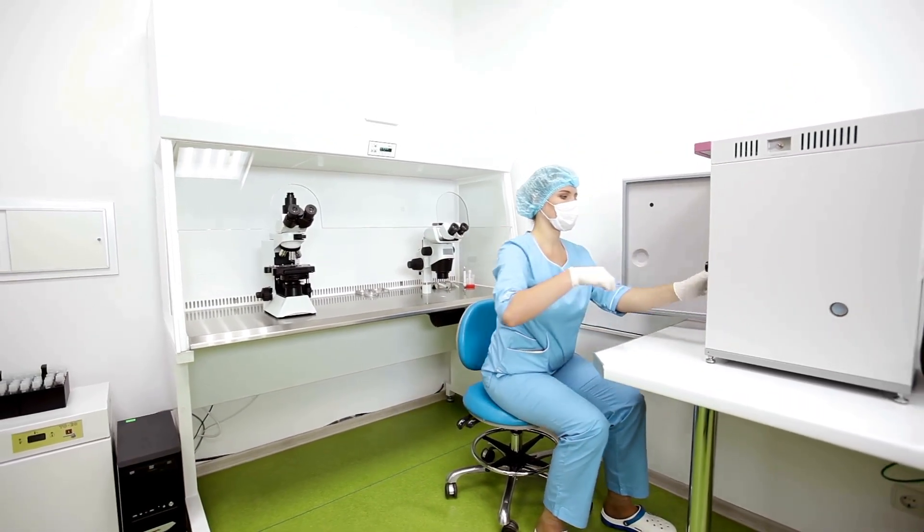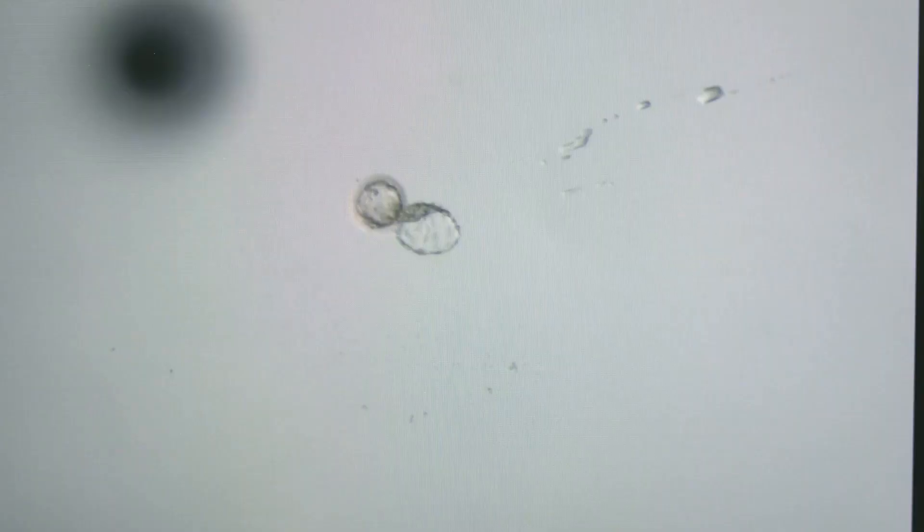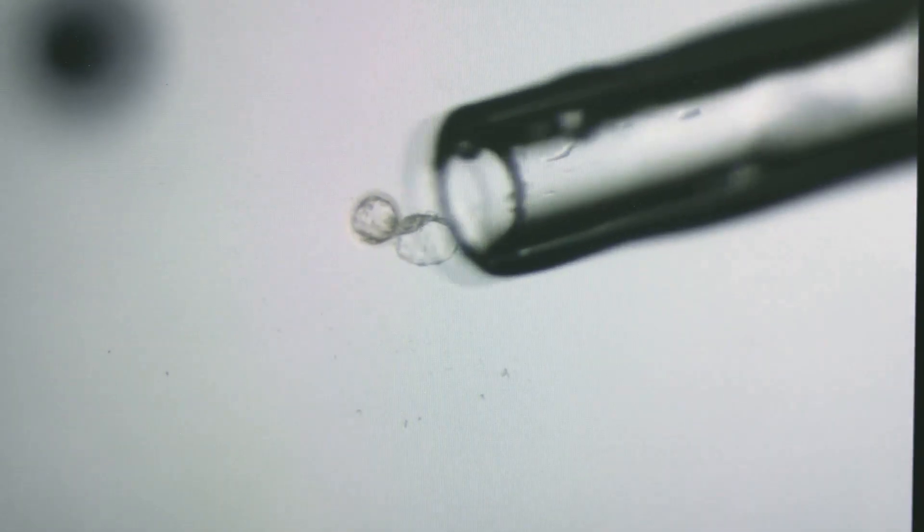Scientists have experimentally triggered human egg cells to divide without fertilization using chemical stimulation and electric shocks. These eggs form parthenotes, early-stage embryos that divide for a few days. However, they never develop into a fetus. They are useful for stem cell research, not reproduction.